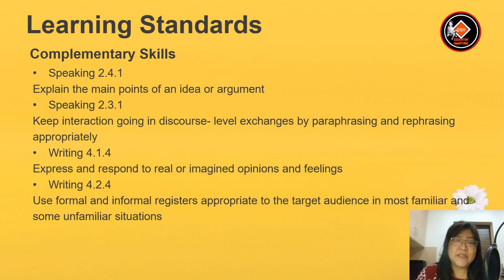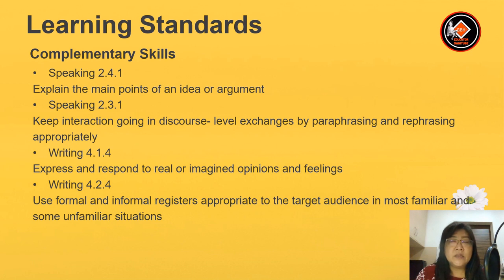Let's look at the complementary skills. Speaking 2.4.1 — explain the main points of an idea or argument. Speaking 2.3.1 — keep interaction going in discourse-level exchanges by paraphrasing and rephrasing appropriately. Writing 4.1.4 — express and respond to real and/or imagined opinions and feelings. Writing 4.2.4 — use formal and informal registers appropriate to the target audience in most familiar and unfamiliar situations.